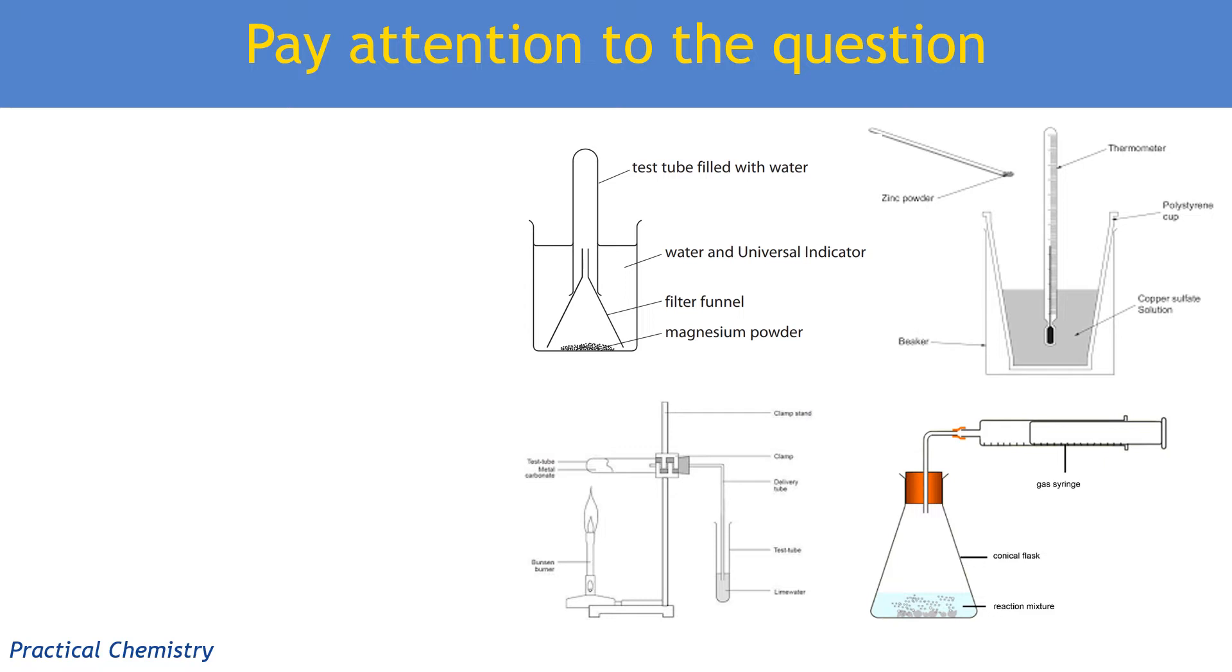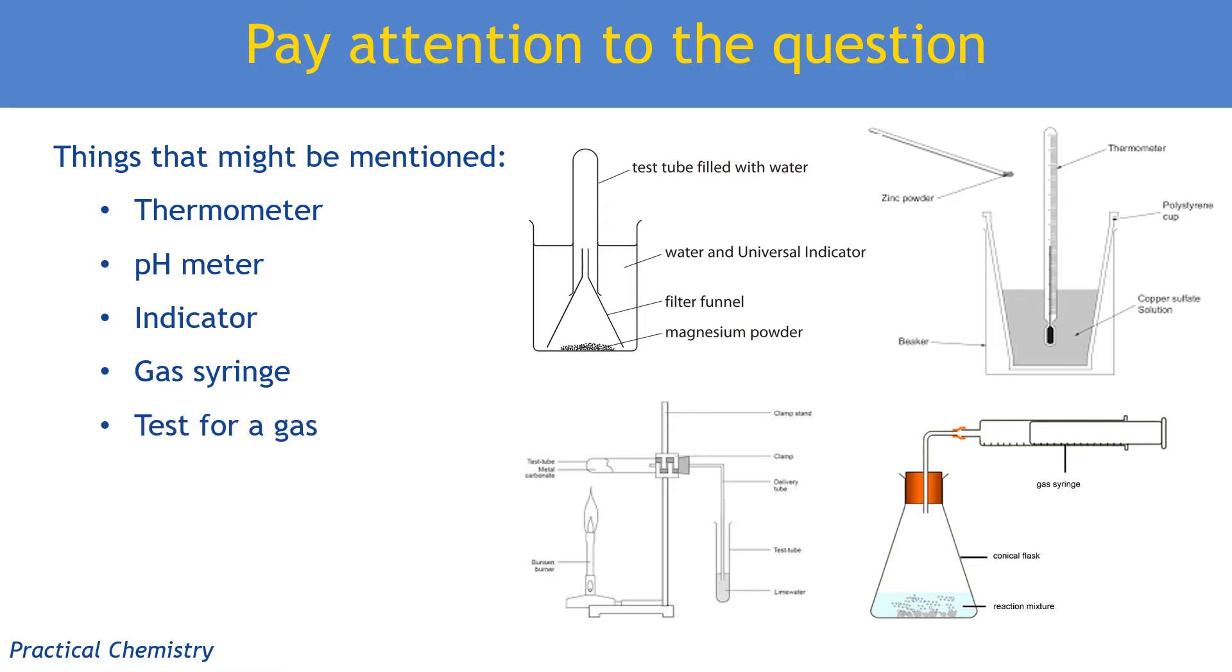So the question's really important. The context of the practical is important to what you write if you're talking about observations. So you need to look out in the question, does it mention a thermometer or a pH meter or an indicator or a gas syringe or does it mention testing for a gas or testing for some other chemical during the process of the experiment? So you have to look for these clues and remember that these clues might be part of a diagram. This one in the top left was a diagram that was used in an exam paper this year and at least 50% of the students that I marked were missing the fact that it said universal indicator. And because they didn't talk about it in their observation, they missed one of the marks because it was a compulsory mark. Even if they got two correct observations, they only got one mark if they didn't talk about the indicator.